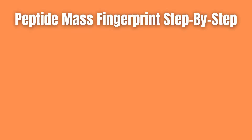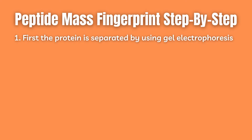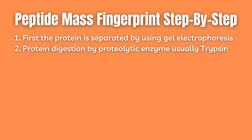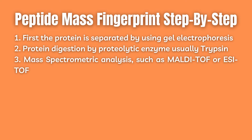Moving on, peptide mass fingerprinting can be carried out step by step in the following manner. First, the protein is separated by using gel electrophoresis. Second, protein digestion is carried out by a proteolytic enzyme, usually trypsin. Third, mass spectrometric analysis such as MALDI-TOF or ESI-TOF is used in order to figure out the real mass of the peptides in our sample.